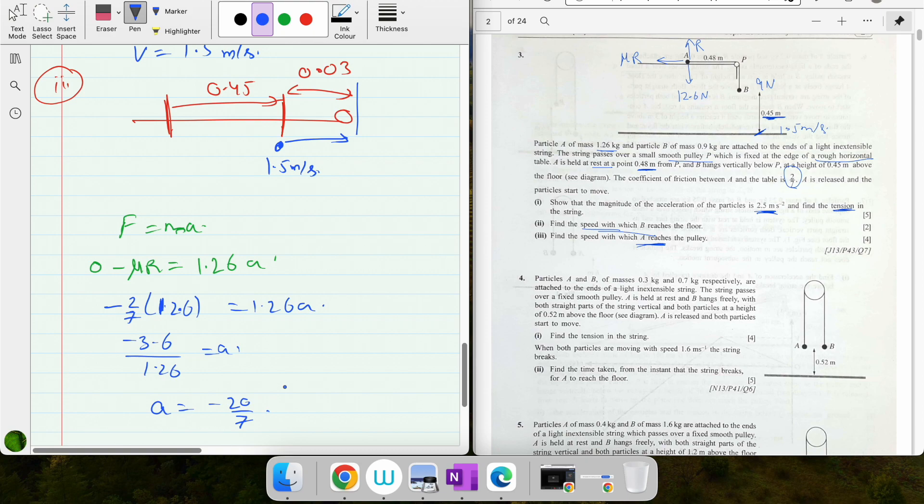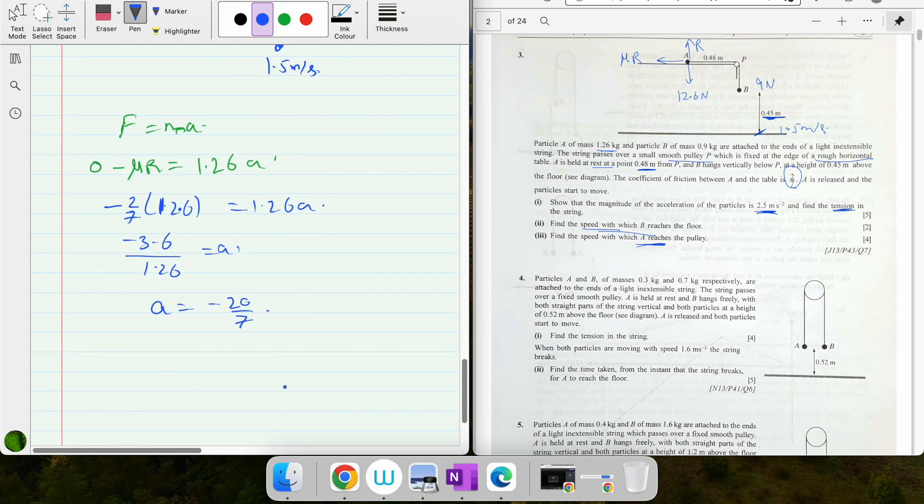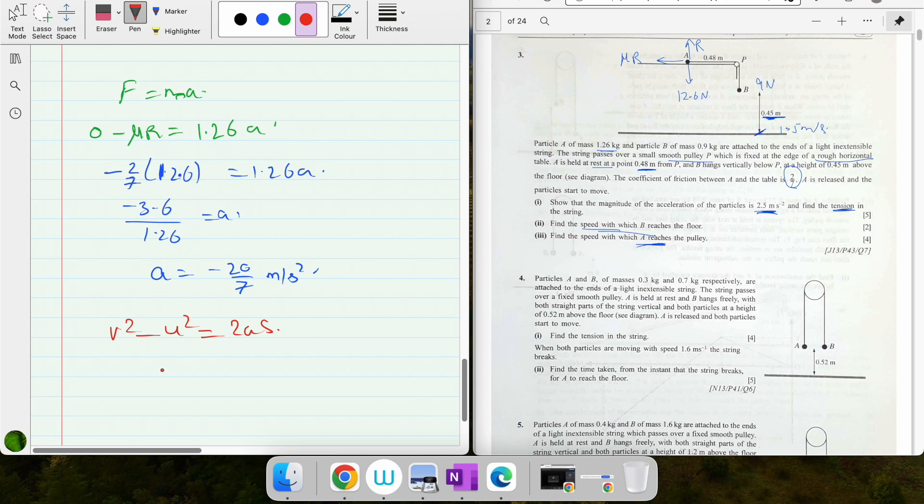Acceleration is 3.6 by 1.26, negative sign just indicates that it is retarding - slowing down. So once we have the acceleration minus 20/7 meters per second squared, I can now find the speed using the formula v² minus u² equals 2as. Final velocity is unknown, initial velocity is the one which B left it with A, that was 1.5 meters per second.